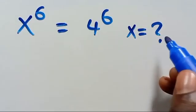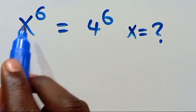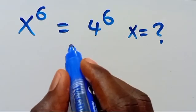What is the value of x, given that x to the power of 6 equals 4 to the power of 6?